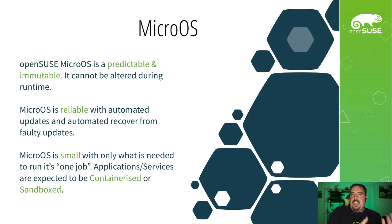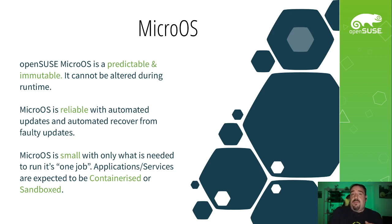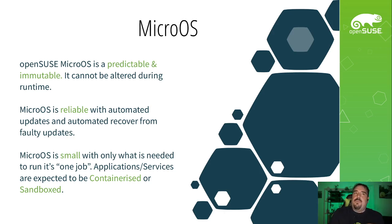Keeping with that reliability: the less things on the system to go wrong, the less things can possibly break. So we keep MicroOS as small as possible for the general use case of it doing one job. After that, we expect all the applications and services to be coming from something like containers or sandboxes. That's really the mindset and philosophy behind what we've done with MicroOS.